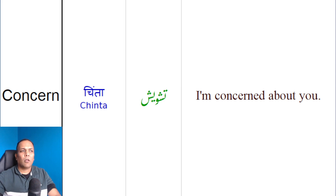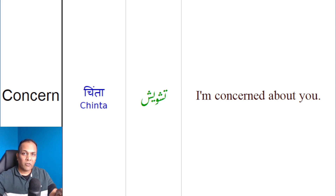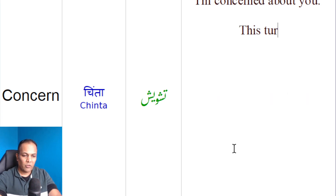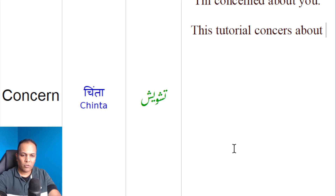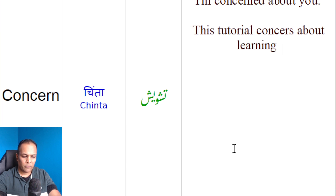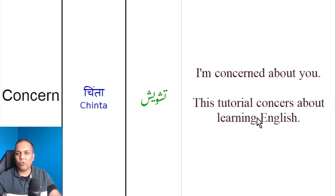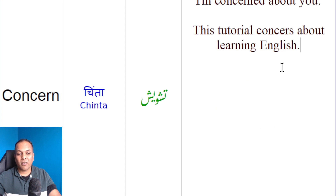Iske alawa, jisna hum kehetay hain 'concerning this matter,' yaan ke is maamilay say related. Toh koi cheez kisi cheez say related ho, yaa kisi cheez ke baaray mein ho, toh uswok hum concern ka word use kertay hain. Jissel hum keh saktay hain: 'This tutorial concerns about learning English.' Yaan ke yeh tutorial Englishy seekhne ke baaray mein hai — is maana ke liye hum ne word concern ko use kiya.